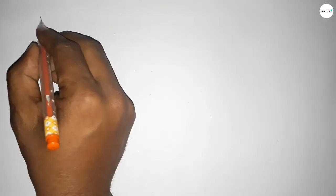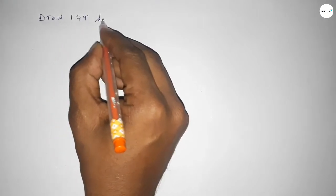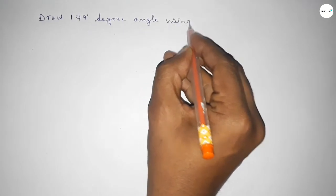Hi everyone, welcome to SI Share Classes. Today in this video, we will draw a 149-degree angle using a protractor. Let's start the video.